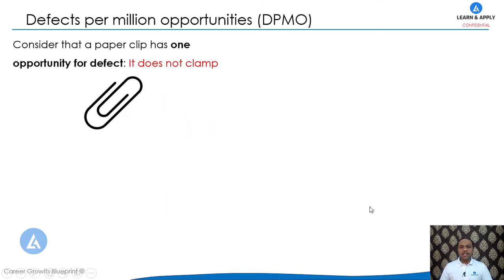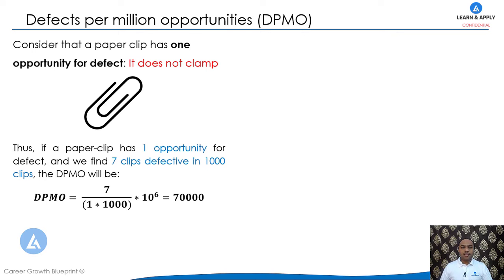Let's understand these concepts with the help of a practical example. The first term is Defects Per Million Opportunities, in short indicated as DPMO. Consider that a paper clip has one opportunity for defect, and that opportunity is that it does not clip. If a paper clip has one opportunity for defect and we find seven clips defective in one thousand clips, then the DPMO will be calculated as follows.